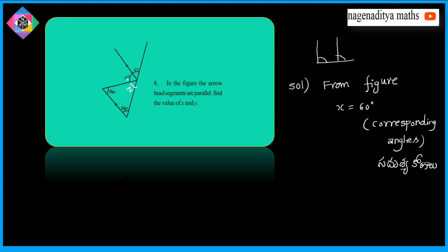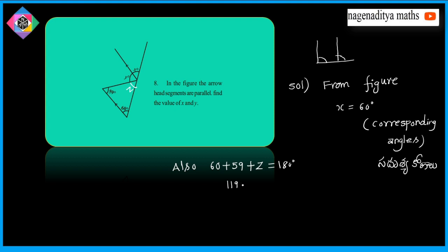The sum of these three angles is 180 degrees because it is a straight angle. Also, the sum of angles in a triangle is 180 degrees. Therefore, 60 plus 59 plus Z is equal to 180. That is 119 plus Z equals 180, which implies Z is equal to 180 minus 119, that is 61 degrees.